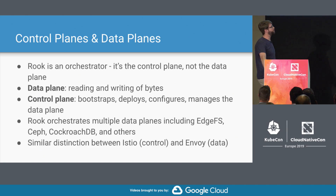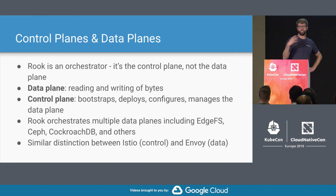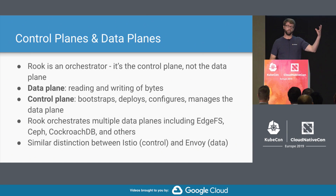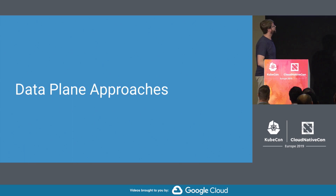There are multiple data planes that Rook performs orchestration services for. If you're familiar with Istio and Envoy, it's the exact same relationship — Istio is a control plane that manages and configures Envoy proxies, while Envoy just handles streaming bits, routing traffic, and handling the data. So: Istio control plane, Envoy data plane, Rook control plane — and EdgeFS, Ceph, Cassandra, CockroachDB, et cetera are data planes. You can have different approaches to global scalability in your data plane and in your control plane.